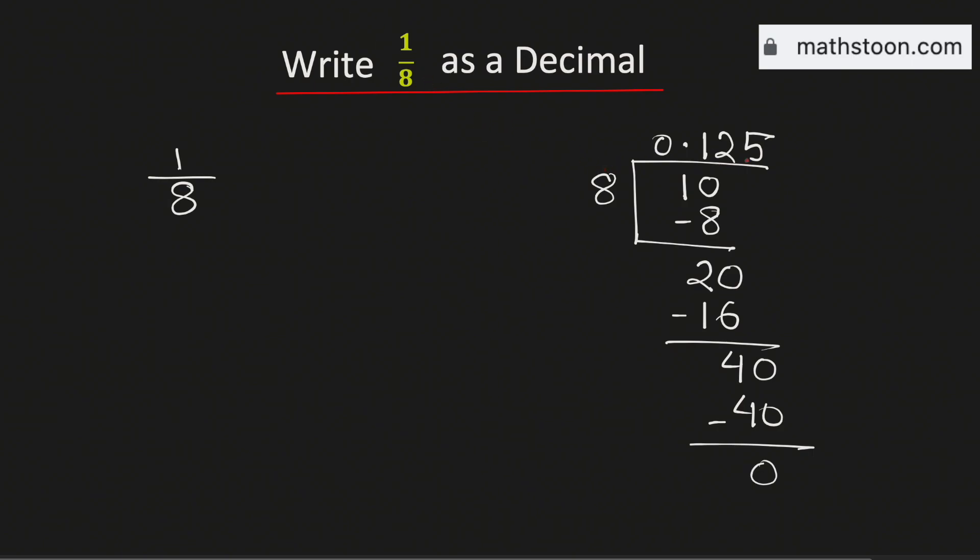Therefore, 1 over 8 as a decimal is equal to this number. That means 1 over 8 in decimal form is equal to 0.125, and this is our final answer.